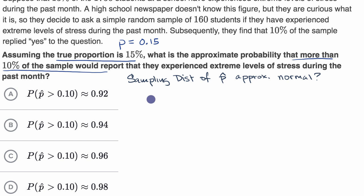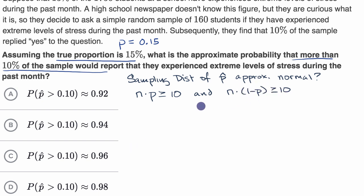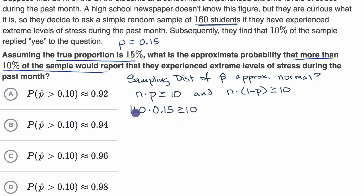The rule of thumb is that if we take our sample size times our population proportion and that is greater than or equal to 10, and our sample size times one minus our population proportion is also greater than or equal to 10, then our sampling distribution of sample proportions is approximately normal. In this case, the newspaper is asking 160 students, so 160 times 0.15 gives us 24, which is indeed greater than or equal to 10. That checks out.